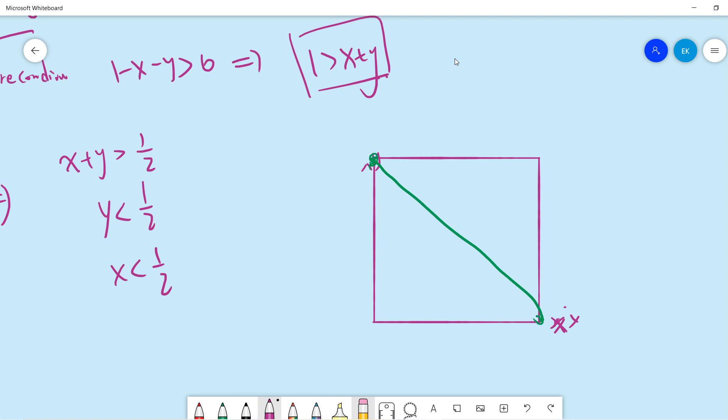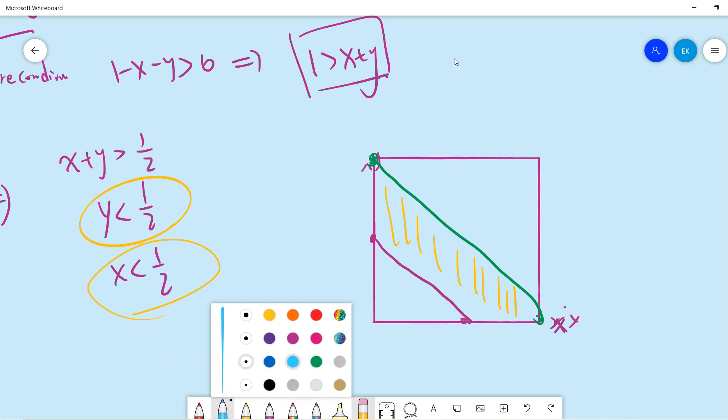And x plus y is larger than half. So half. So now we have this region and y is less than half and x is less than half, so basically, let me change the color.